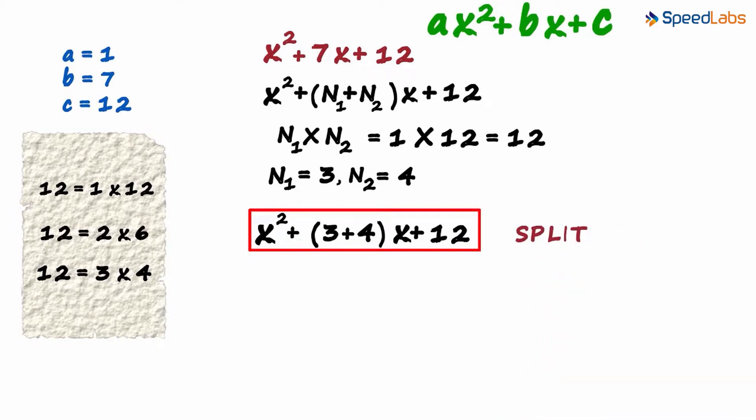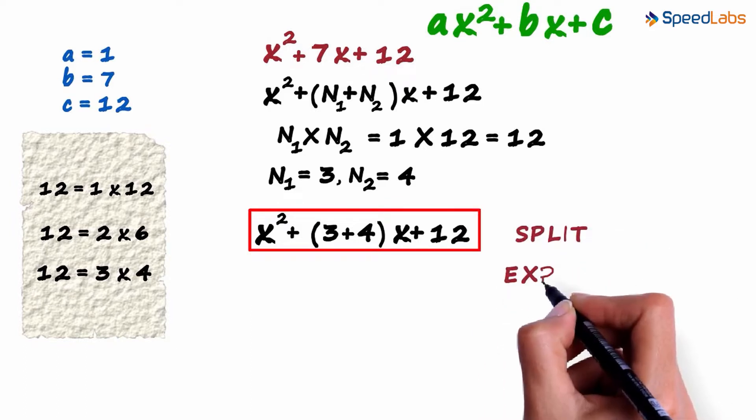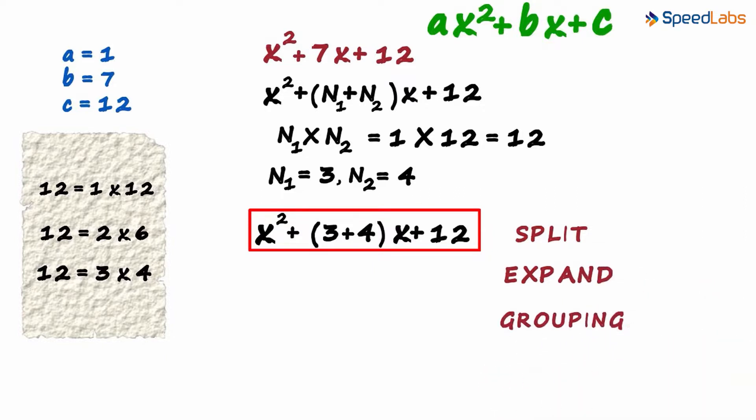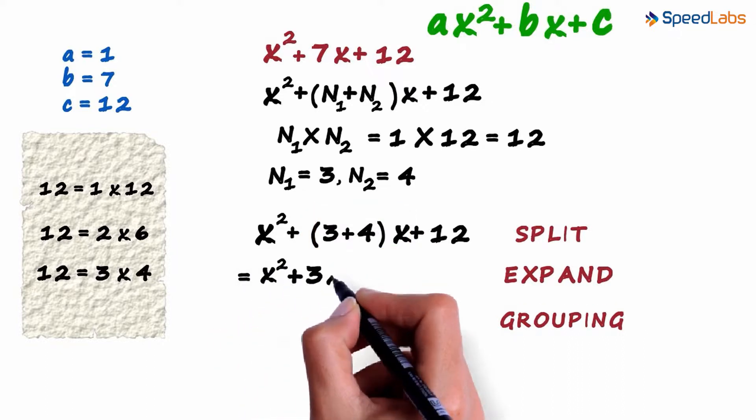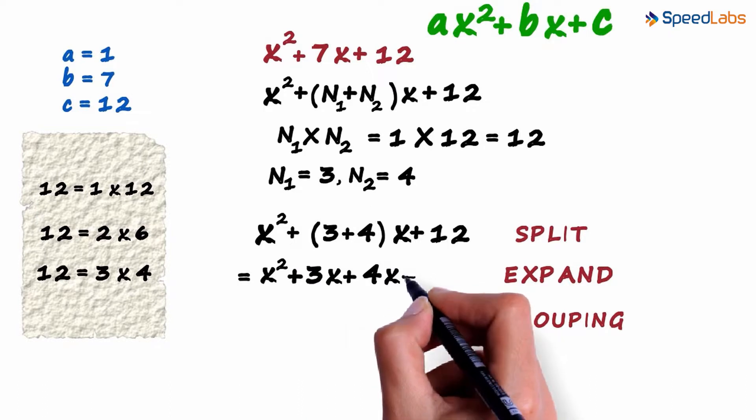After this, all we have to do is expand the brackets and use grouping. We expand the brackets first. This equals x squared plus 3x plus 4x plus 12.